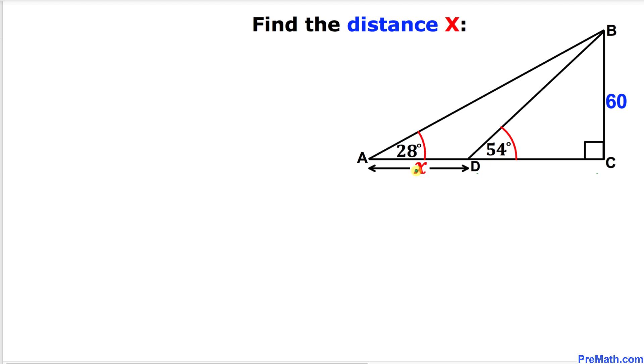Welcome to PreMath. In this video tutorial, we have a right triangle ABC. In this right triangle, we have two additional triangles, as you can see in this figure, such that one of the angles is 28 degrees and the other angle is 54 degrees, and our side length BC is 60.